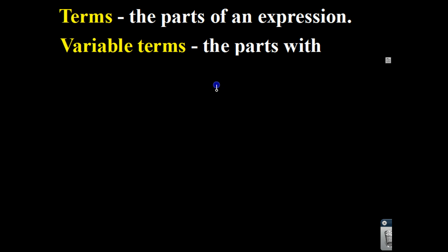First thing we've got to do — this is going to be kind of heavy on vocabulary to begin with. So let's go ahead and take a look at some of these words. First, we're going to talk about terms. These are known as the parts of an expression. Feel free at any point to pause the video and write the stuff down. Then we have variable terms — these are the parts of an expression with variables.